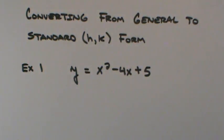Converting from general to standard h,k form when dealing with parabolas. For example 1, I've got y equals x squared minus 4x plus 5.